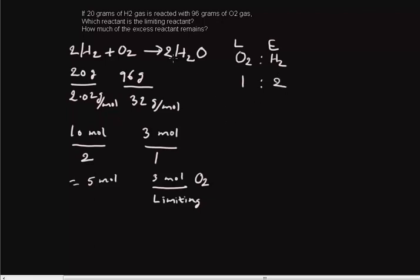But in the actual problem, we have 96 grams of O2 gas. That is 3 moles of O2. So 3 moles of O2 would require how many moles of hydrogen gas to react completely. So that is an unknown quantity x.